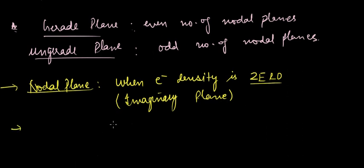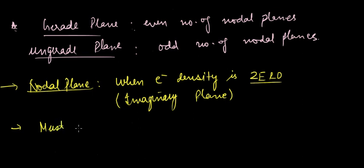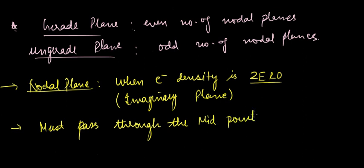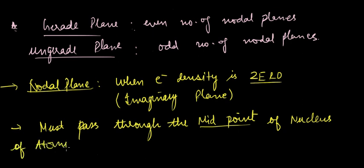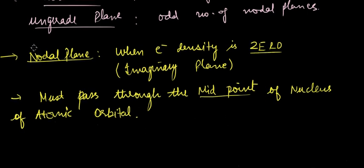One important point: the nodal plane must pass through the midpoint of the nucleus of the atomic orbital. Only then will the corresponding imaginary plane be counted as a nodal plane.